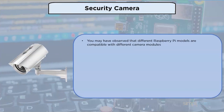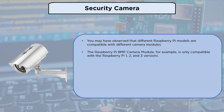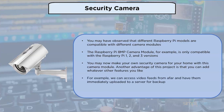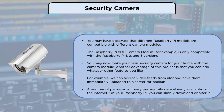Security camera: different Raspberry Pi models are compatible with different camera modules. The Raspberry Pi 8MP camera module is only compatible with Raspberry Pi 1, 2, and 3 versions. You can make your own security camera for your home. You can access video feeds from afar and have them immediately uploaded to a server for backup. A number of packages and library prerequisites are available on the internet that you can download or modify.